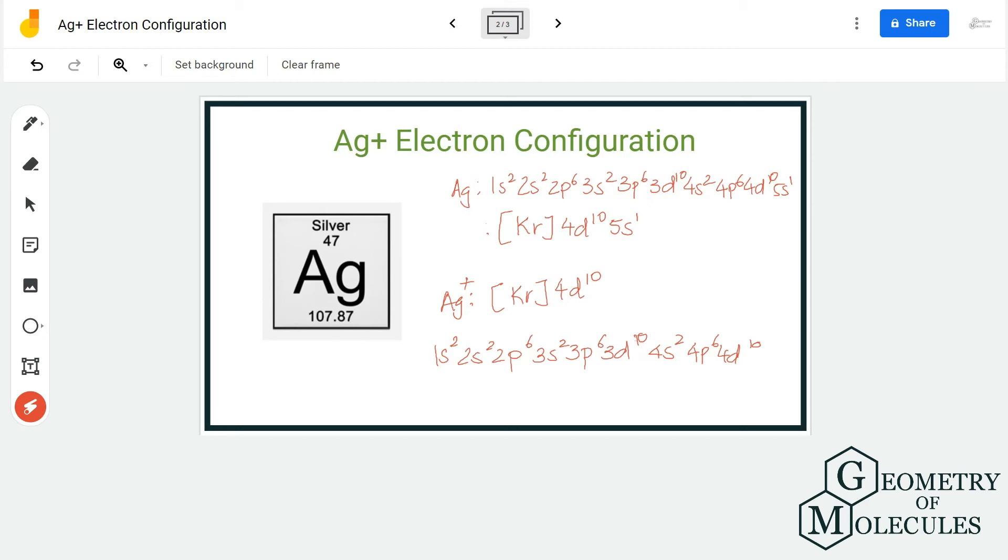However, when it acquires a positive charge and gives away one electron, that electron is gone from the 5s orbital. The electron configuration of Ag+ is Kr 4d10.